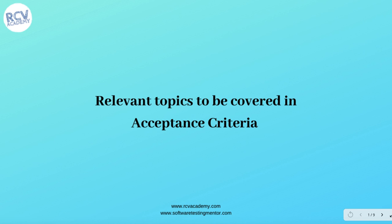In this tutorial we are going to learn about the relevant topics that need to be covered in acceptance criteria defined for any user story in an agile project. During each iteration, developers create code which implements the functions and features described in user stories. This code is verified and validated via acceptance testing, which is done to validate whether the code being developed meets the requirements or not.